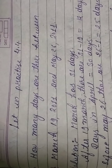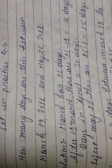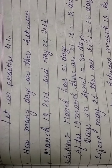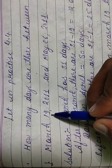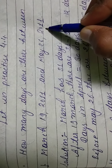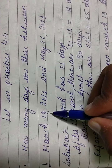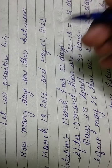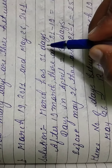Good morning students, let us start Exercise 4.4. Question number 1: How many days are there between March 19, 2011 and May 26, 2011? March has 31 days, so from March 19: 31 minus 19 = 12 days remaining in March.